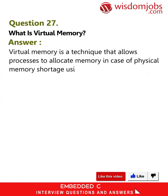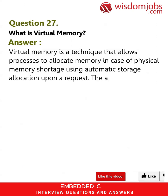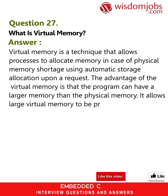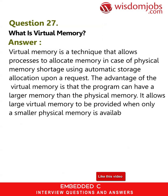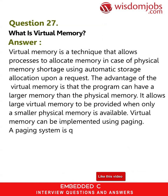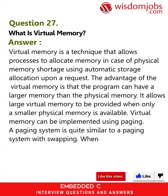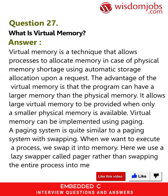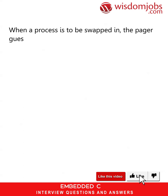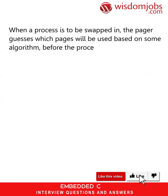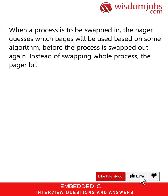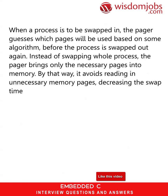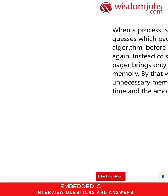Question 27: What is virtual memory? Answer: Virtual memory is a technique that allows processes to allocate memory in case of physical memory shortage using automatic storage allocation. The advantage is that a program can have a larger memory space than the physical memory available. Virtual memory can be implemented using paging. When a process is to be swapped in, a lazy swapper called a pager brings only the necessary pages into memory based on an algorithm, avoiding reading in unnecessary memory pages and decreasing swap time and the amount of physical memory needed.